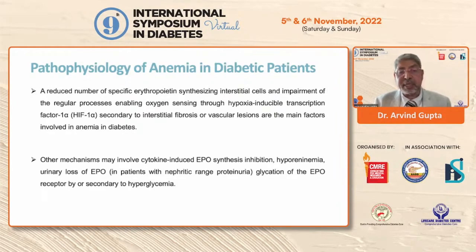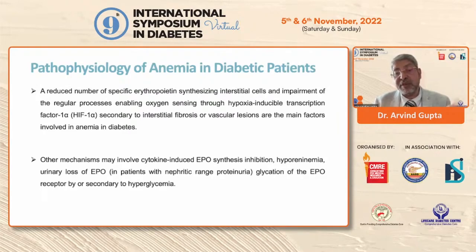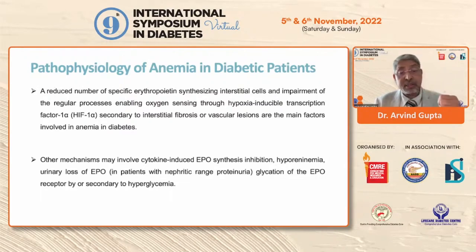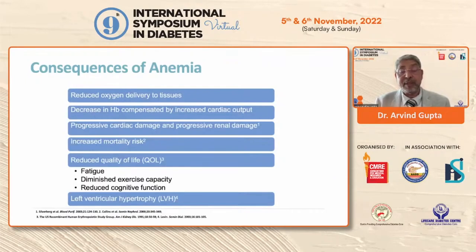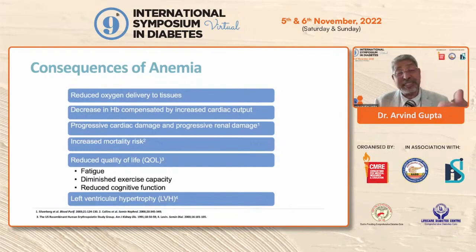There are several other mechanisms involving cytokine-induced EPO synthesis inhibition, hyperanemia, urinary loss of EPO seen in some nephrotic patients, and glycation of EPO receptors secondary to hyperglycemia. The consequences of anemia in diabetes patients are significant and increase to a greater level when both conditions coexist.